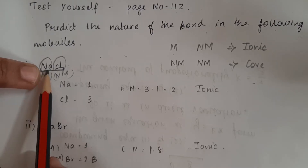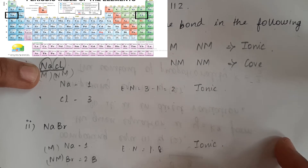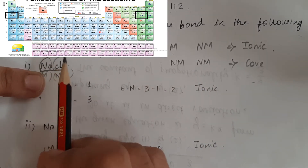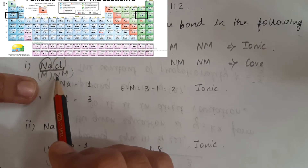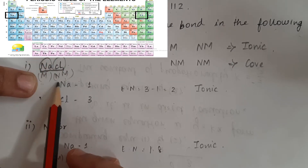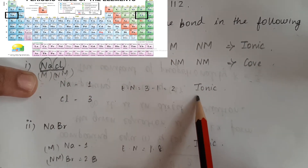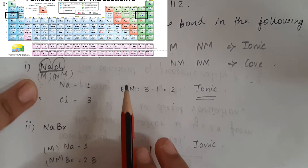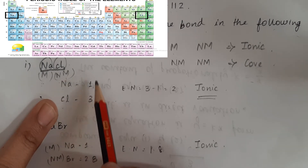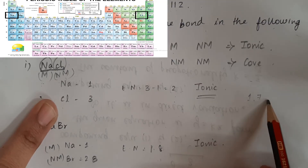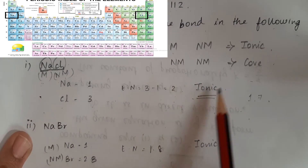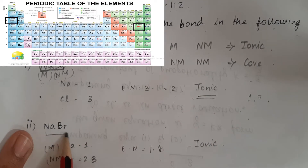Sodium is a metal — shown in green color. So looking at metal or non-metal in our molecule: metal or non-metal means ionic bond forms. Also checking the electronegativity value: sodium's electronegativity value is 1, chlorine's electronegativity value is 3. The difference is 3 minus 1 equals 2, which is greater than 1.7, so the bonding formed is ionic.